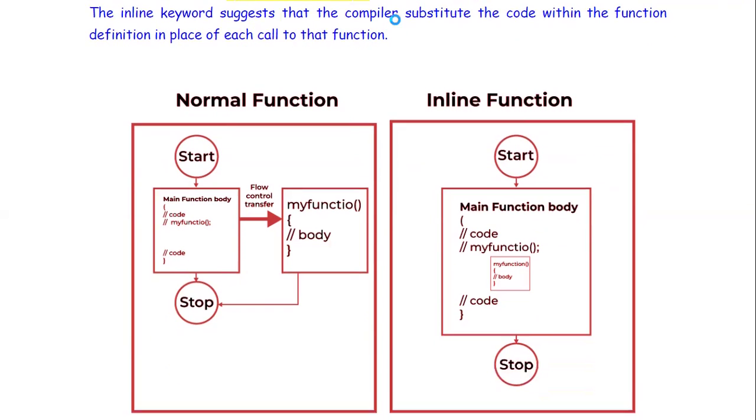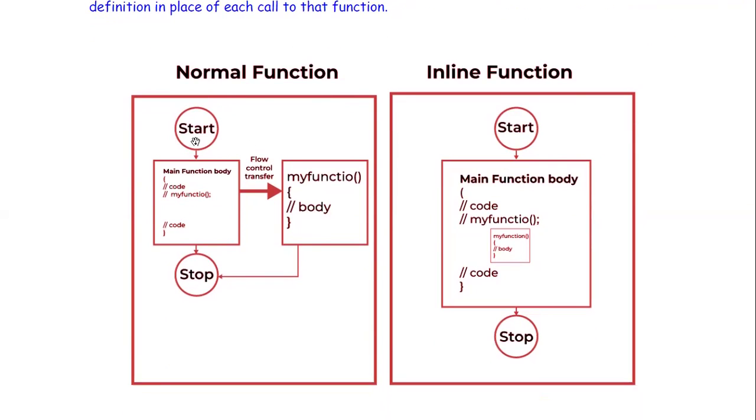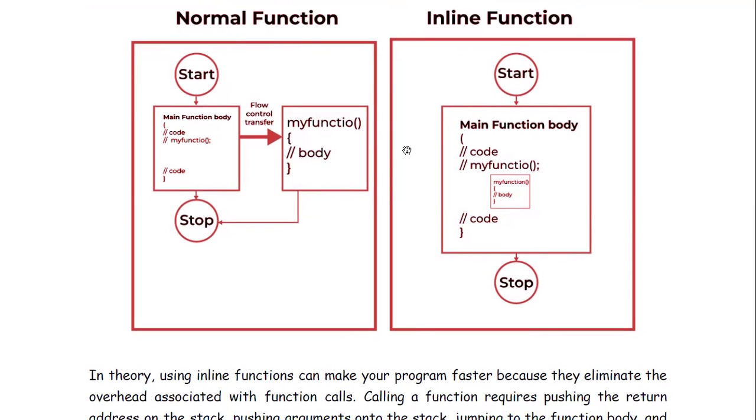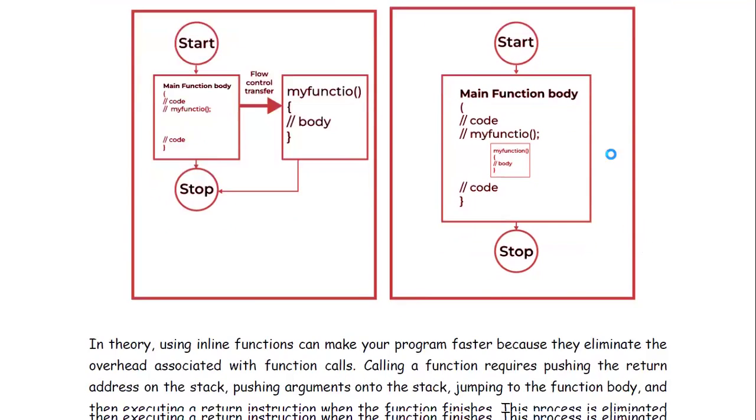The inline keyword suggests that the compiler substitute the code within the function definition in place of each call to that function. So basically if this is a normal function you can see here this is the start main function body code and this is the my function code. Now this my function flow control transfer to this particular code of this function then stop. But in the case of inline function start main function body code my function so the function's body is here inside the main function body of the function. Then stop. So this is the difference between them. Here you can see the reference, here you can see the body directly here.